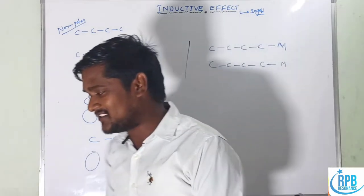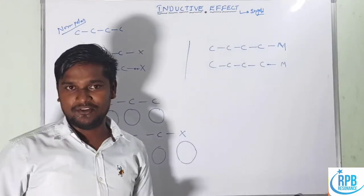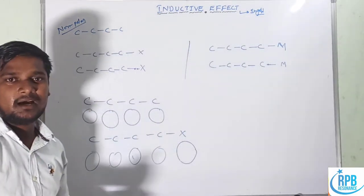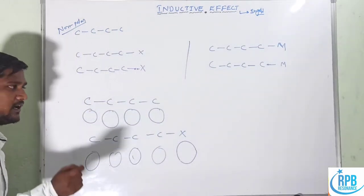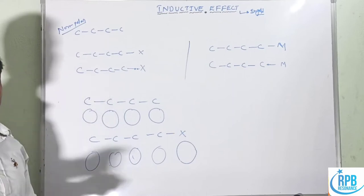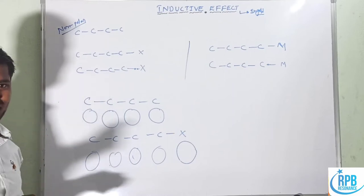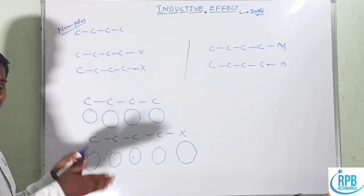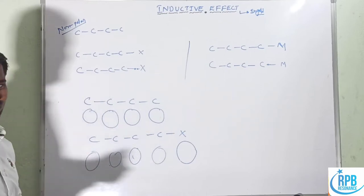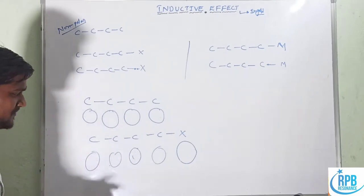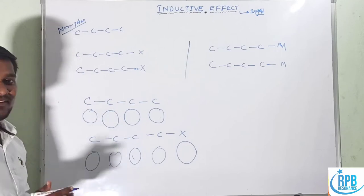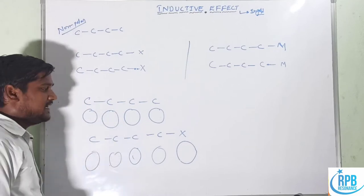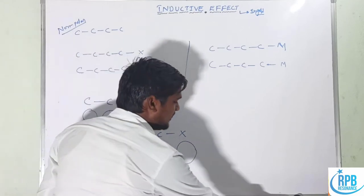The halogen affects the first carbon, but this induction is transmitted by the first carbon along the carbon chain. That transmission of induction along the carbon chain is called the inductive effect.